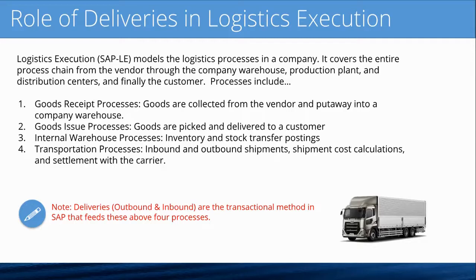Logistics execution covers the entire process chain from the vendor through the company's warehouse, production plants, and distribution centers, and finally to the customer. These processes include the goods receipt process, where goods are collected from the vendor and put away into the company's warehouse; the goods issue process, where goods are picked and delivered to a customer; and internal warehouse processes such as tracking inventory and doing stock transfer postings between two warehouses.